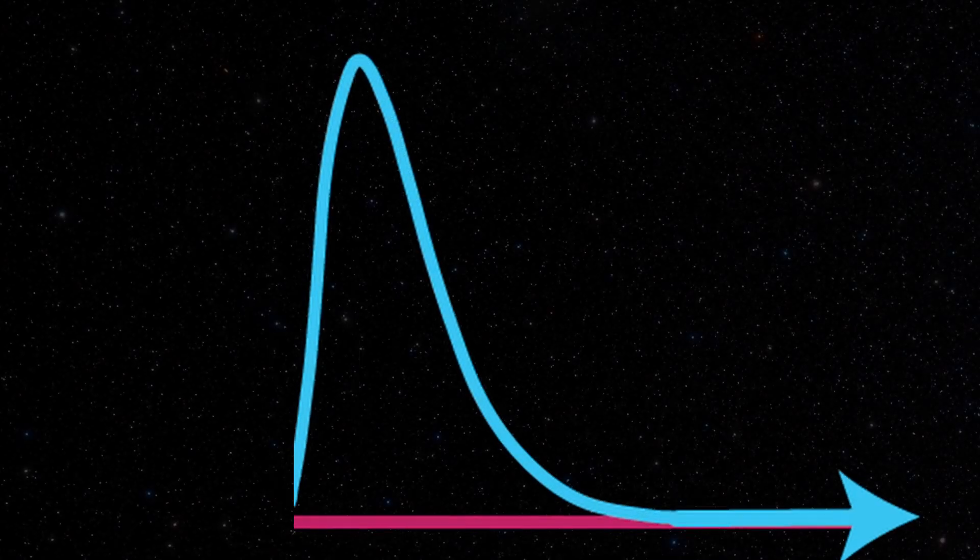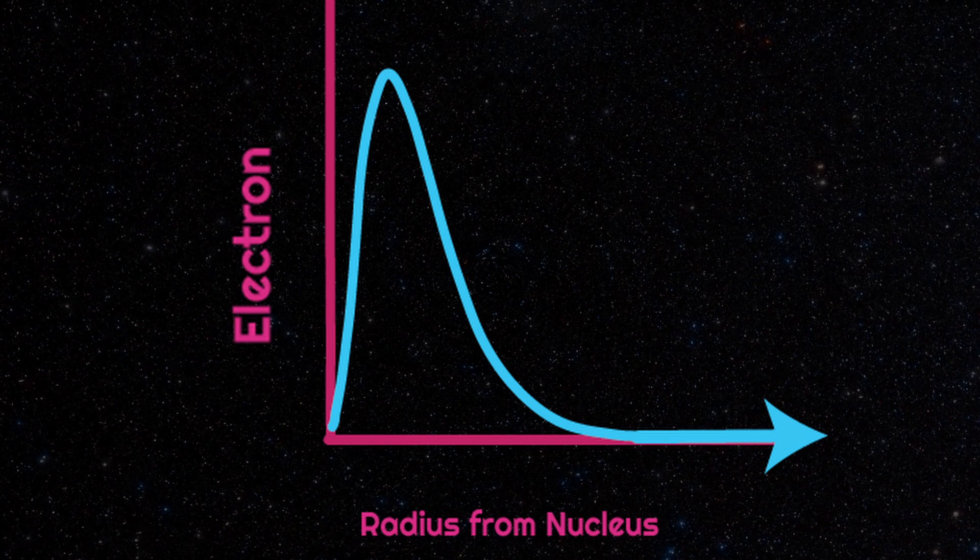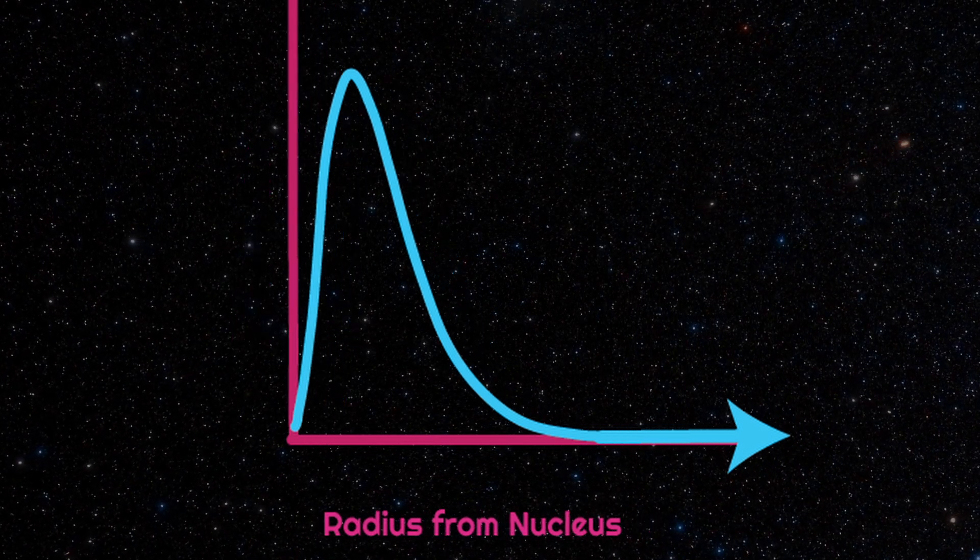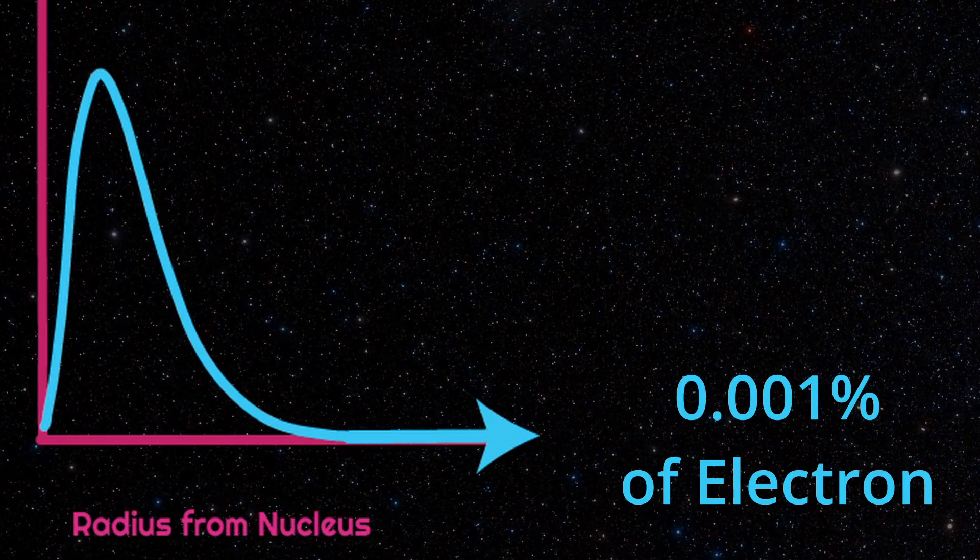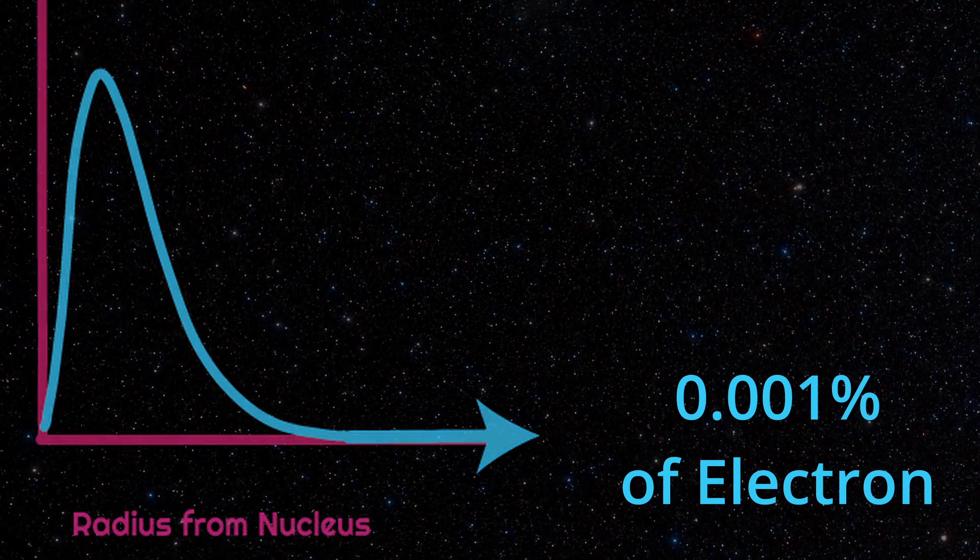Returning to the radial distribution function, we see that the atom is not simply a spherical shell. The tails of the distribution show that there's a 0.001% chance that the electron will be found at any distance from the nucleus.